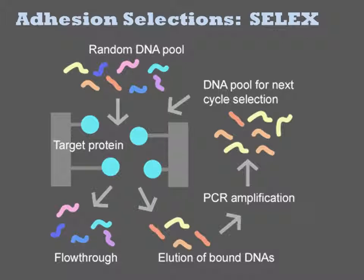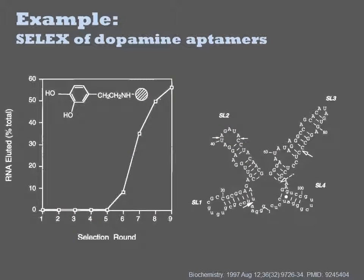You then elute the bound DNAs from the resin and amplify them by RT-PCR. That gives you a new library of DNAs that can be reverse transcribed for another round of selection. You often have to perform selections multiple times. There is a great deal of non-specific binding during this process, so not only are the specific hits carried through in each round, you are simply enriching for these hits. Typically it takes around 5 or 6 rounds of selection to see a signal, but if all goes well and you have hits, you will eventually get to a point where more of the material begins appearing after elution. At this point, you would clone the library, pick individual members to sequence, and then characterize those hits further individually.